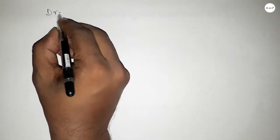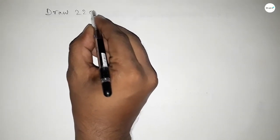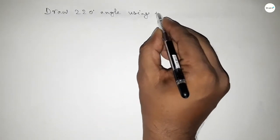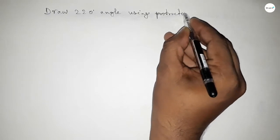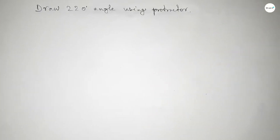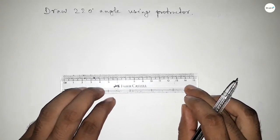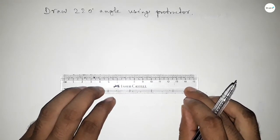Hi everyone, welcome to SSR Classes. Today in this video we have to draw a 220 degree angle by using a protractor. So let's start the video. First of all, we have to draw a straight line of any length.